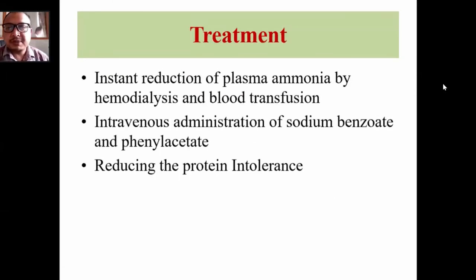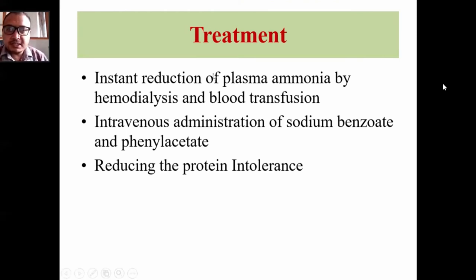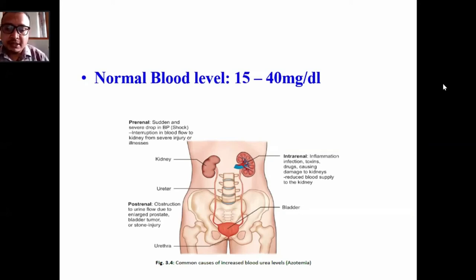Treatment of urea cycle defects involves instant reduction of plasma ammonia by hemodialysis or blood transfusion, and intravenous administration of sodium benzoate and phenylacetate to detoxify ammonia. Protein intake should be reduced. Normal blood urea concentration is 15 to 40 mg/dL. Increased blood urea level is called azotemia.